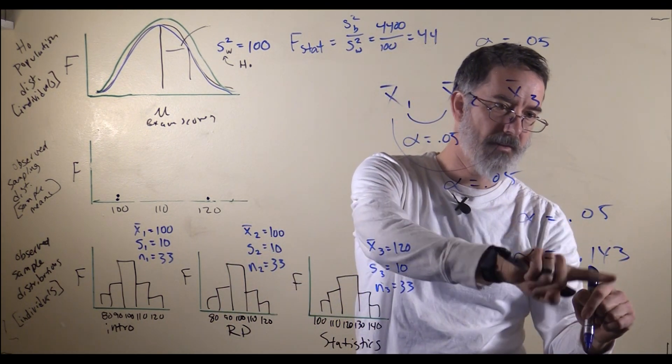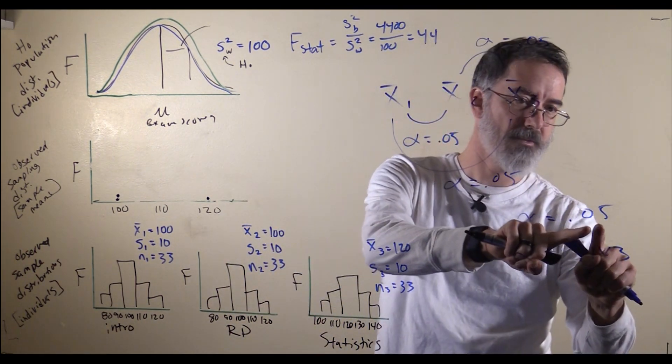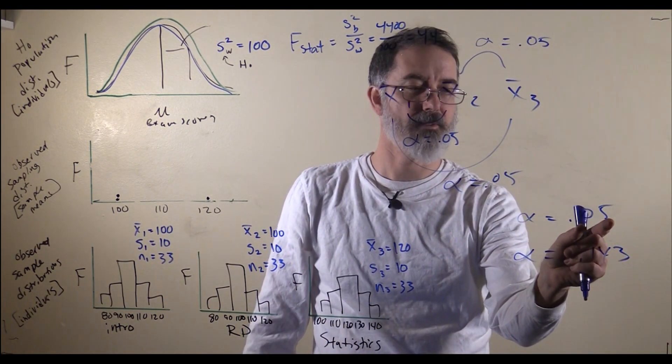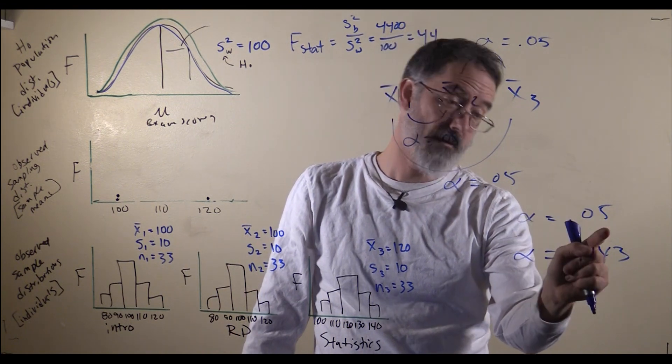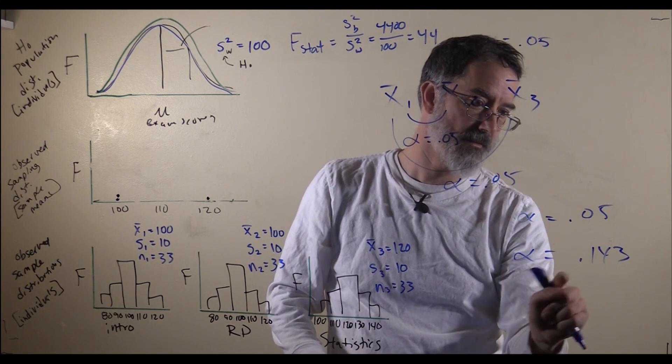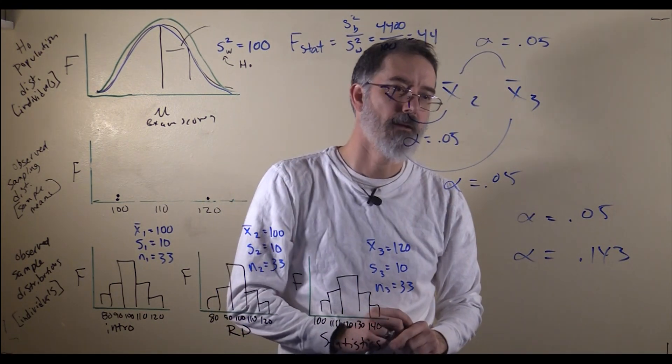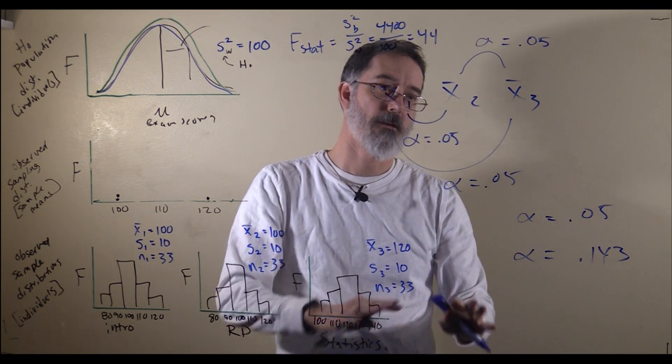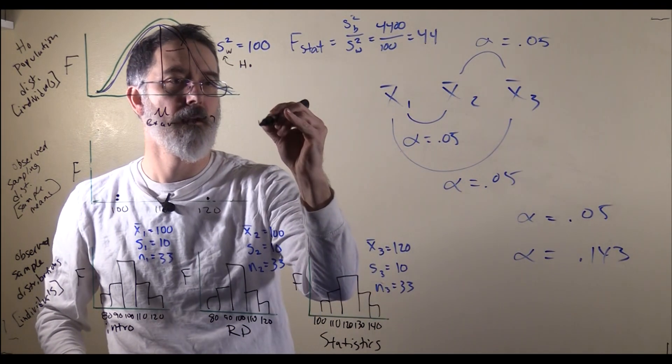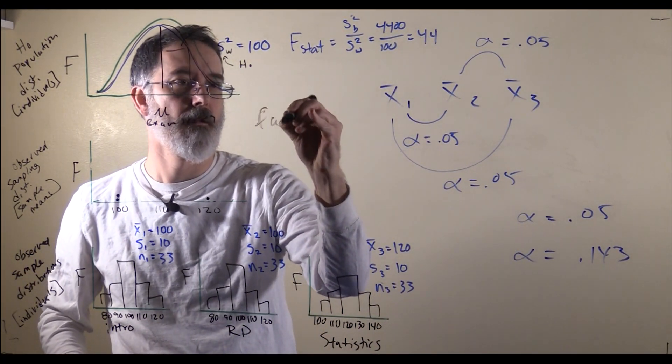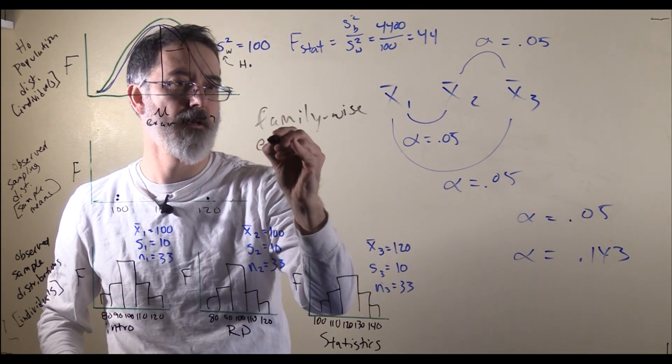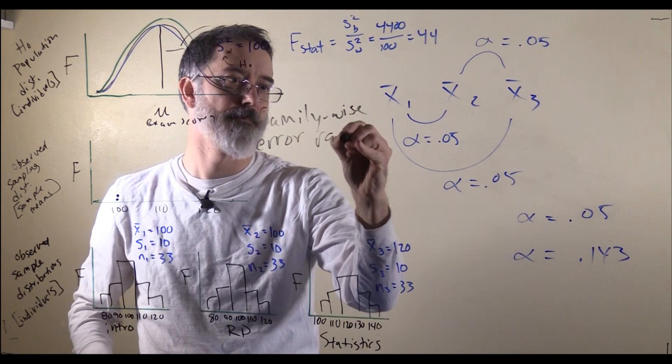You might think it should be .05 times 3, but what happens is that some of the times you would have a false positive on two different tests, or even all three, and that is why this is not .15. This problem of inflated alpha is called the family-wise error rate.